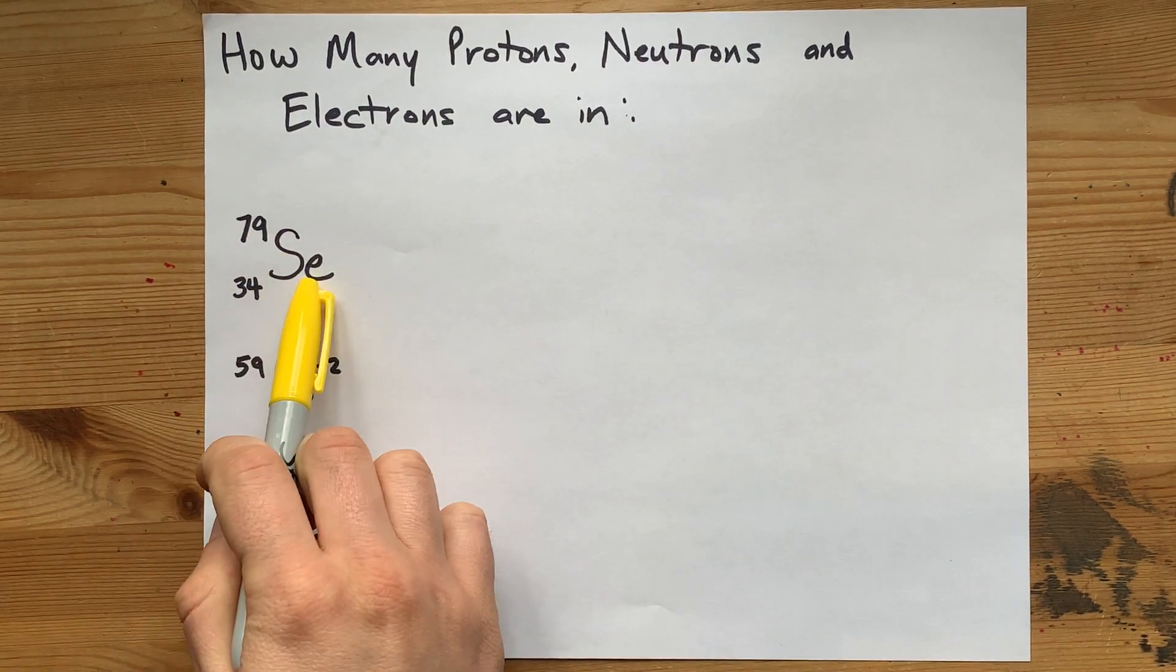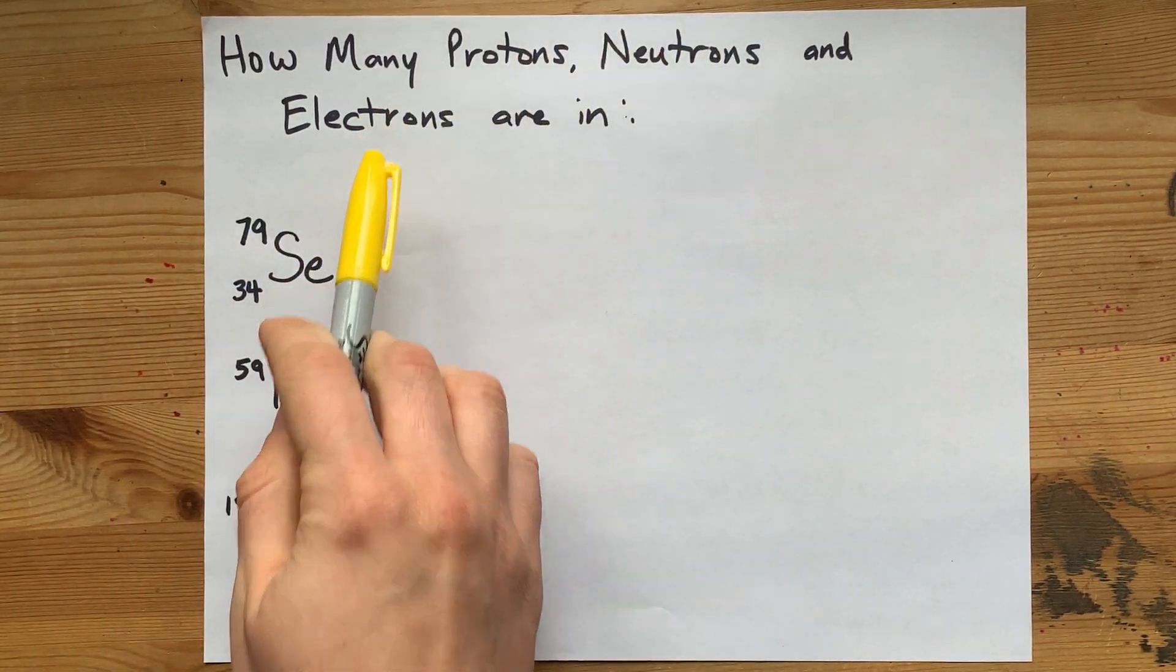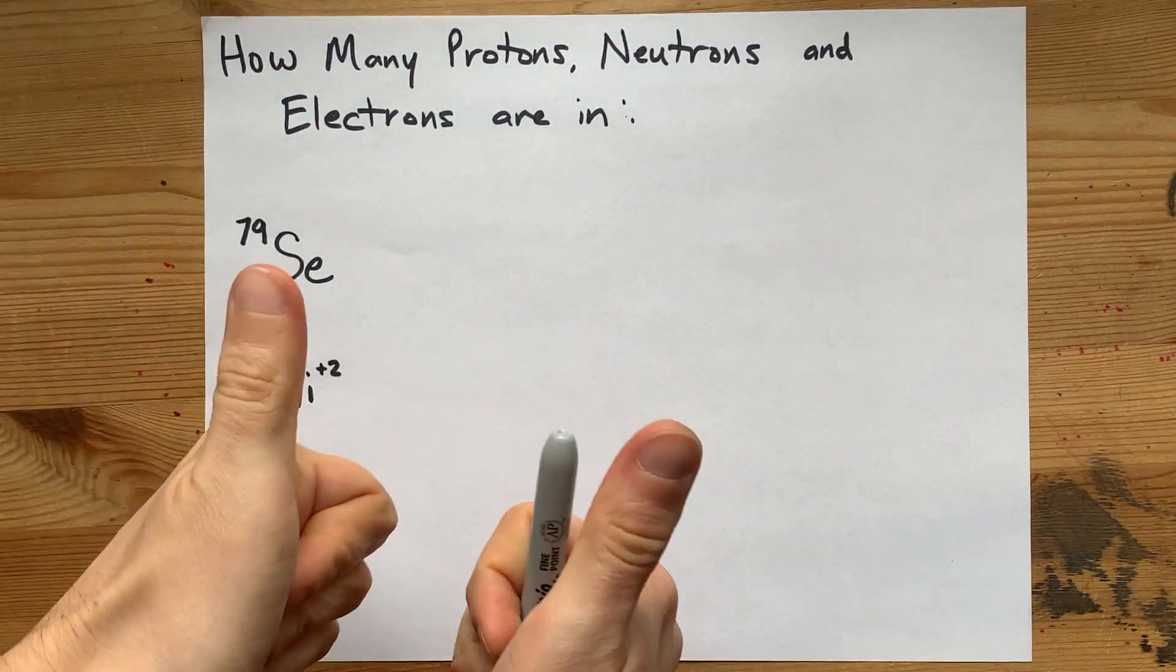Can you use atomic notation to figure out how many protons, neutrons, and electrons are in a particle? Yes, you can.